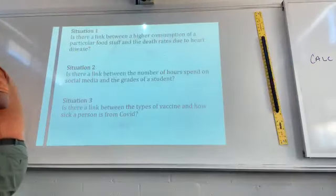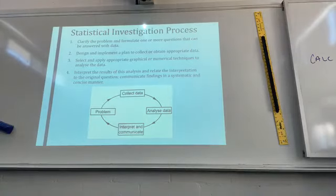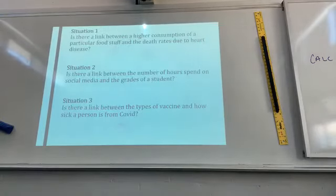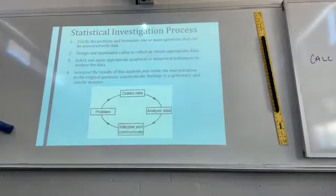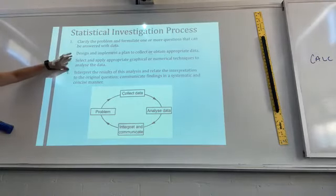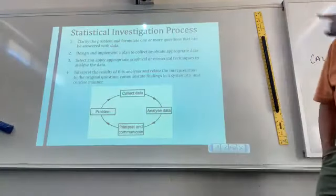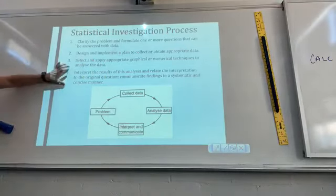That links to the explanatory and response variable, which we'll get to in a few minutes. For the statistical investigation process, you need to think about clarifying the problem. For example: is there a link between number of hours spent on social media and the grades of students? How are we going to clarify the information and formulate one or more questions? Think about how to survey your fellow students, and how to implement a plan to collect appropriate data. Then select an appropriate graphical or numerical technique to analyze the data — this is the part we'll concentrate on for bivariate data analysis, especially regression analysis — and then interpret the results.